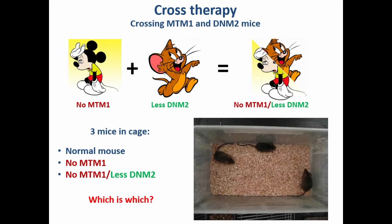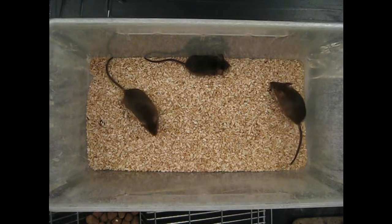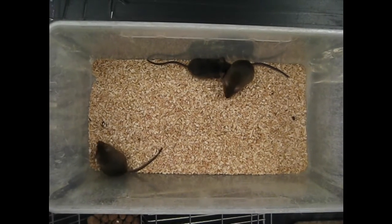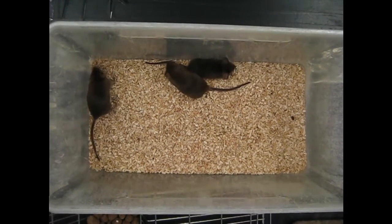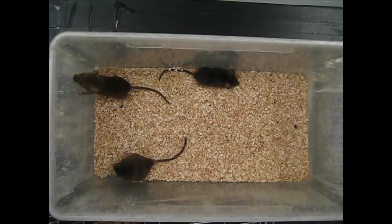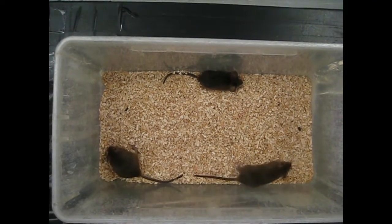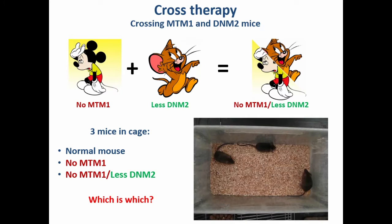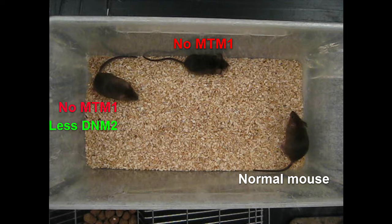I'll show you a movie. In this cage we have three mice: one normal one, one without Myotubularin, and one without Myotubularin and only half of Dynamin-2. I'll ask you — this is a quiz — to tell me which is which. There is obviously one that is not running around a lot, which you might imagine is the myotubular myopathy mouse, but the two others look very similar. Which is the normal mouse and which has only half of Dynamin-2 and no Myotubularin?